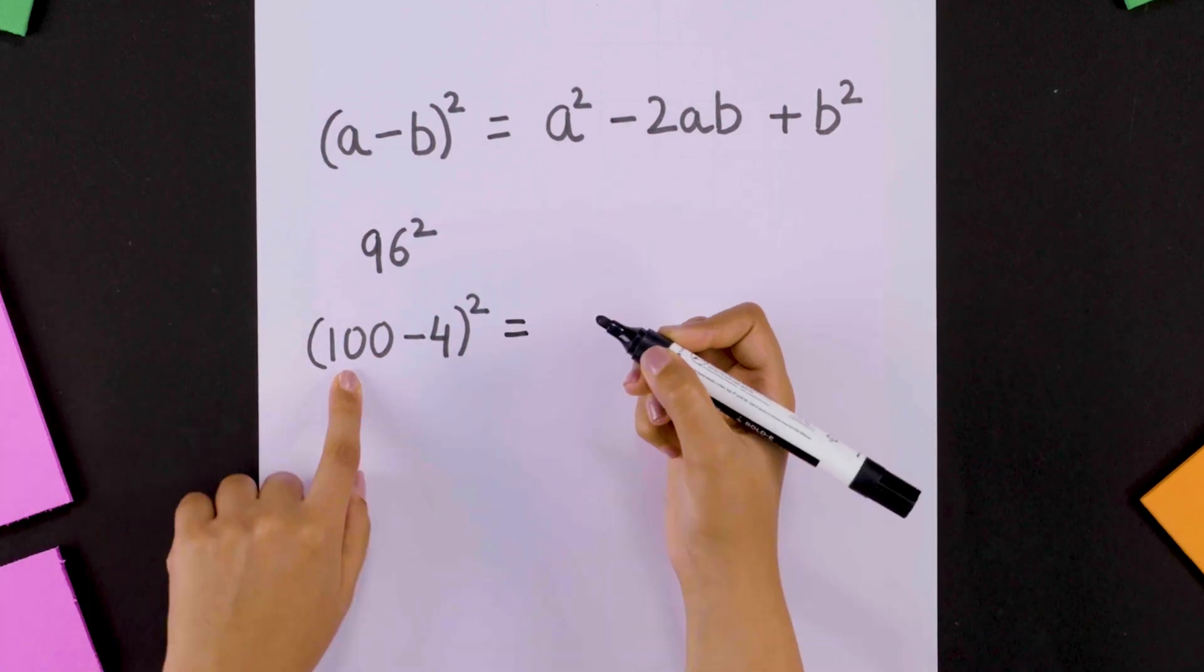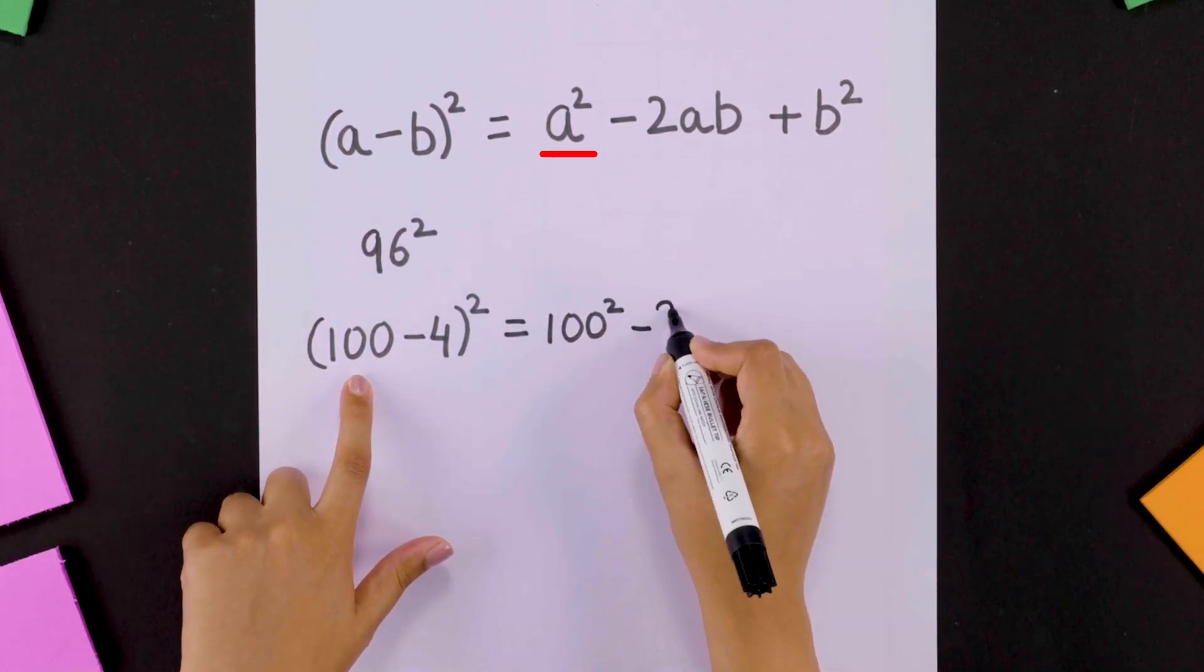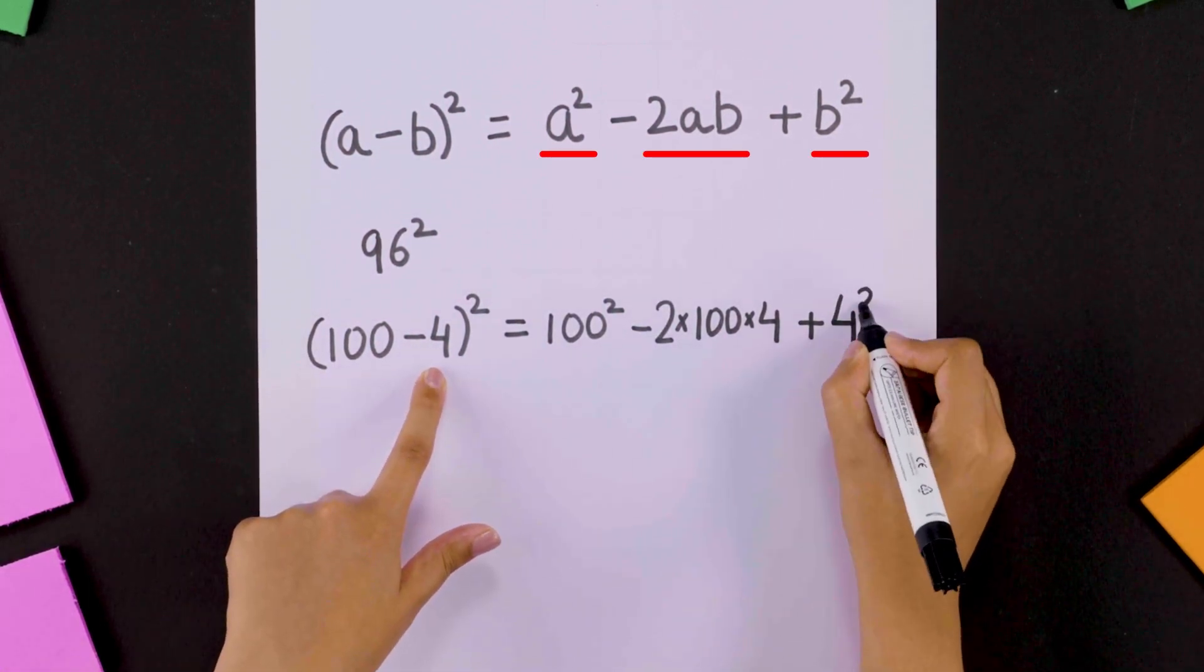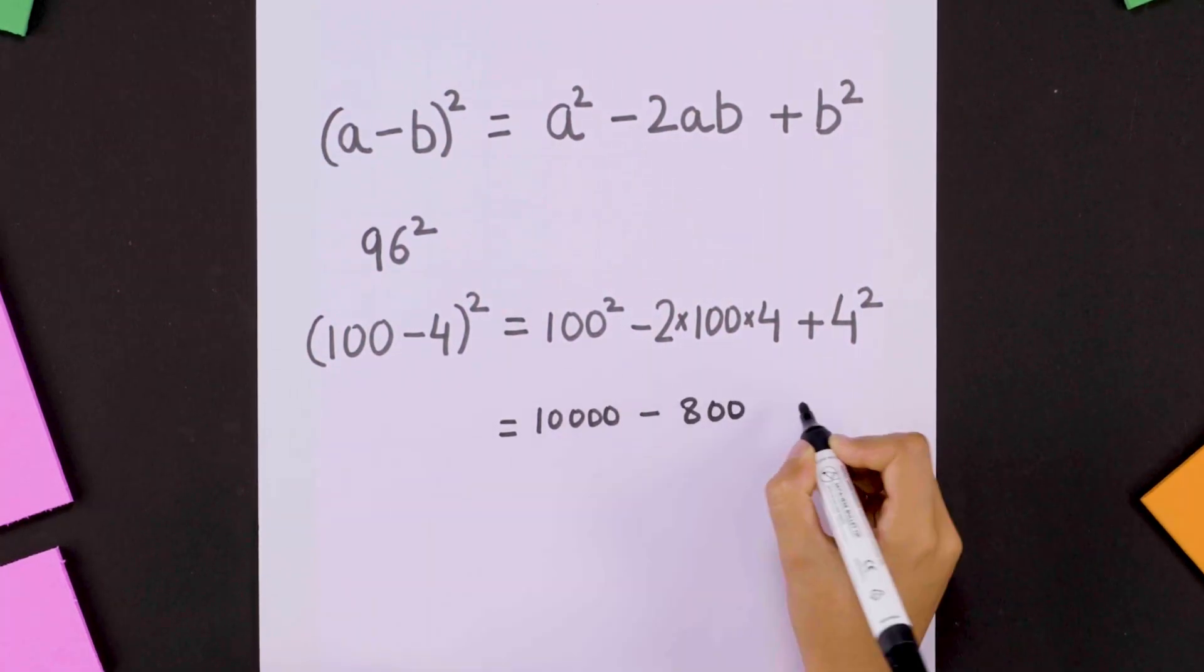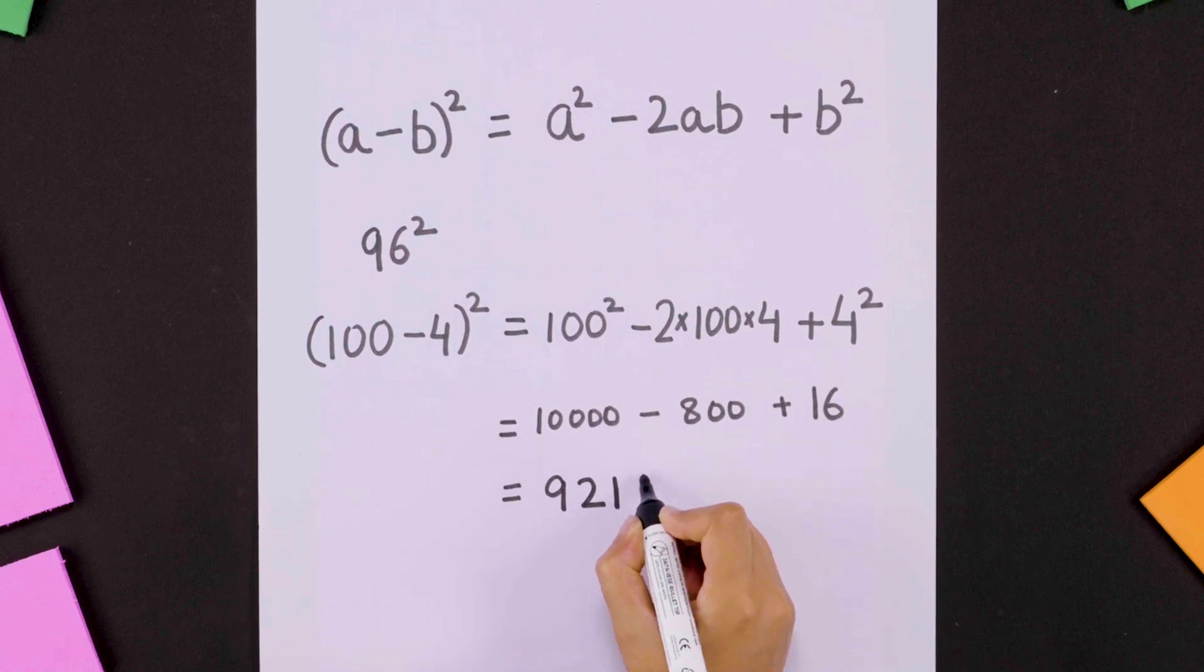Using this identity, we get 100 squared minus 2 times 100 times 4 plus 4 squared. That is 10,000 minus 800 plus 16 which is 9,216.